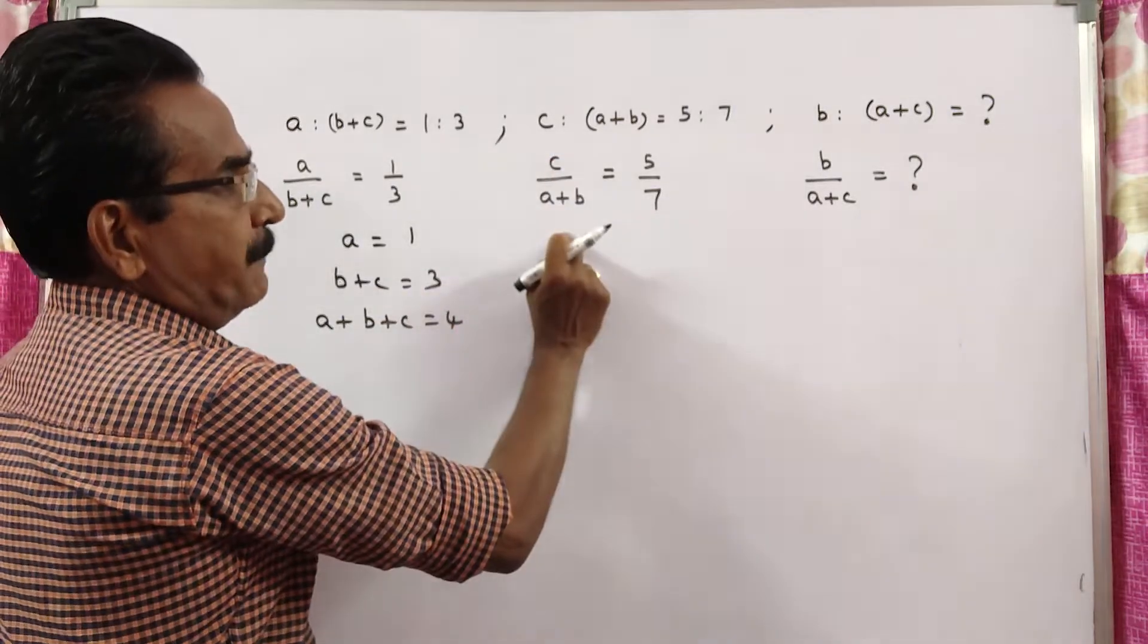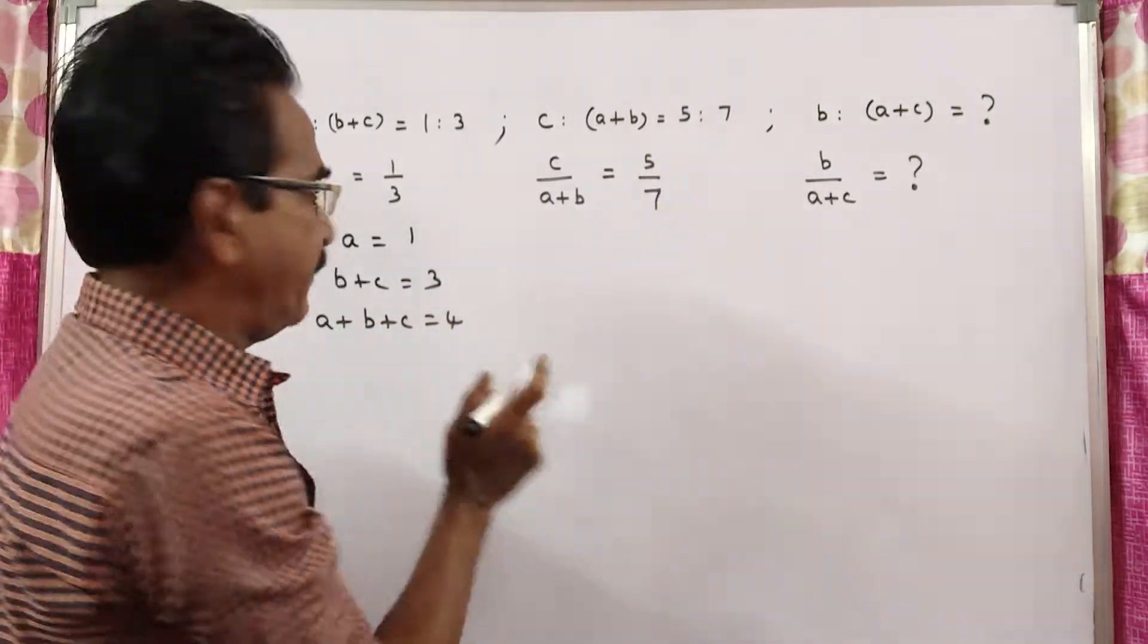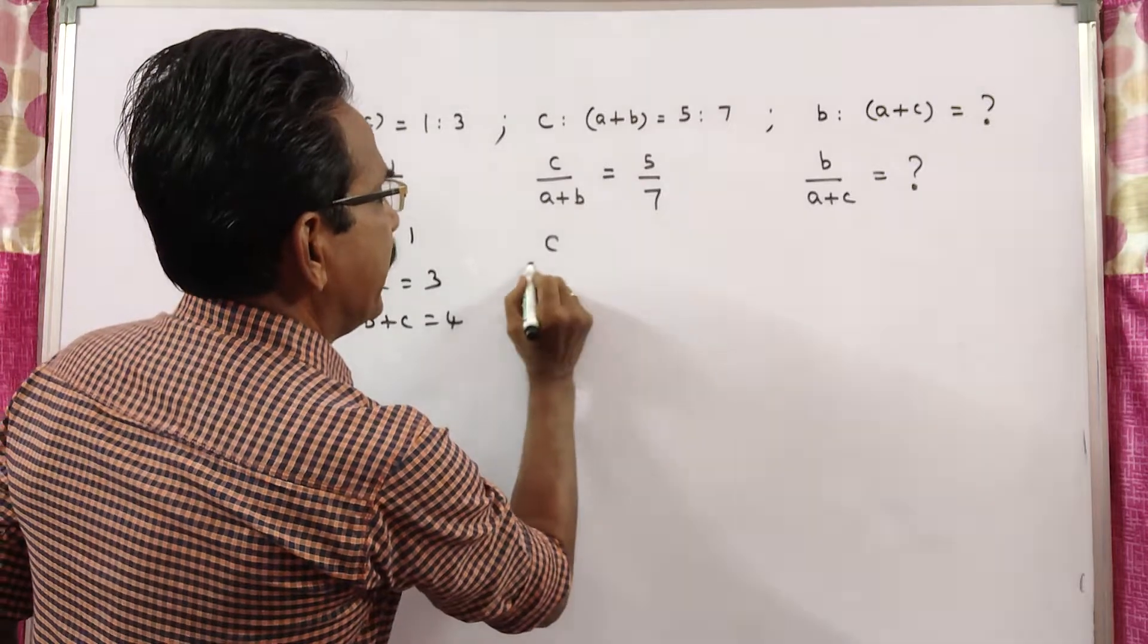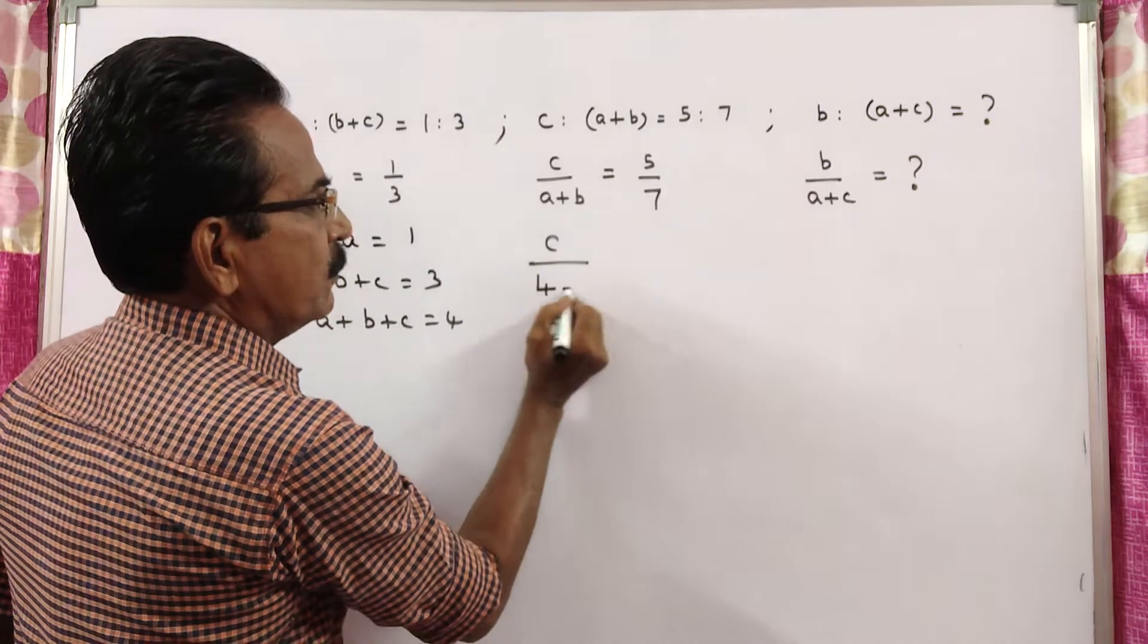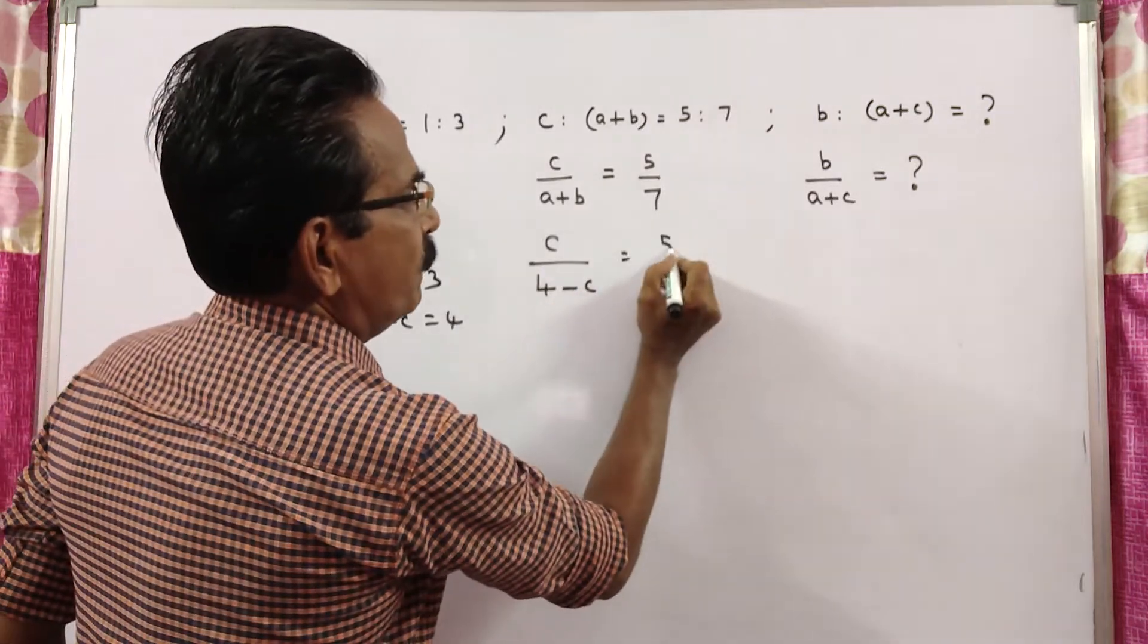See now, c by a plus b is equal to 5 by 7. c by a plus b, a plus b is equal to 4 minus c, that is equal to 5 by 7.